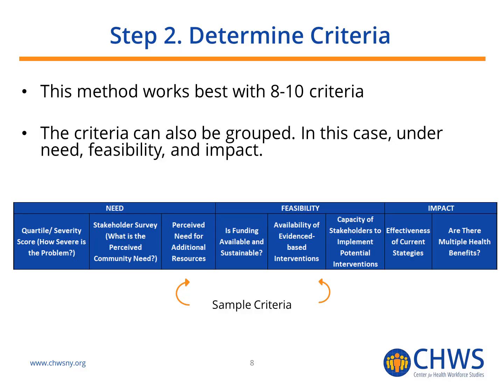The next step is developing criteria for assessing the health issues. The criteria can look at the need for additional resources, the effectiveness of current strategies, and the availability of funding. Criteria can be grouped together, but they do not necessarily have to be. This method works best for 8 to 10 criteria, but you need to consider what to include and should spend considerable time identifying your criteria.